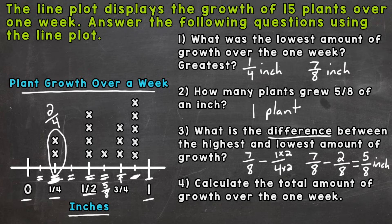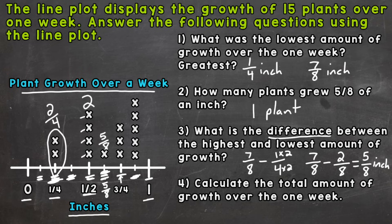Next, we can skip three eighths — there's no x there — so we go to one half. We have four one-half growths: a half plus a half plus a half plus a half, which is two whole inches. So right now we're at two and two fourths. Now we have five eighths of an inch, and there's only one x there, so that's five eighths. Next, we have three fourths: three fourths plus three fourths plus three fourths — there are three x's. Three fourths plus three fourths gives us one and a half, plus another three fourths gives us two and a half.